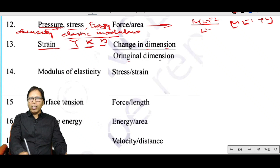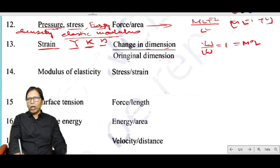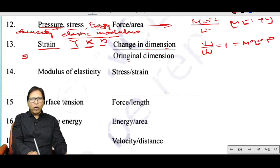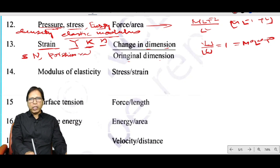Strain is change of dimension divided by original dimension (L/L), so it is dimensionless: M⁰N⁰T⁰. Similarly, Reynolds number, Poisson ratio, and specific gravity (relative density) are also dimensionless quantities.